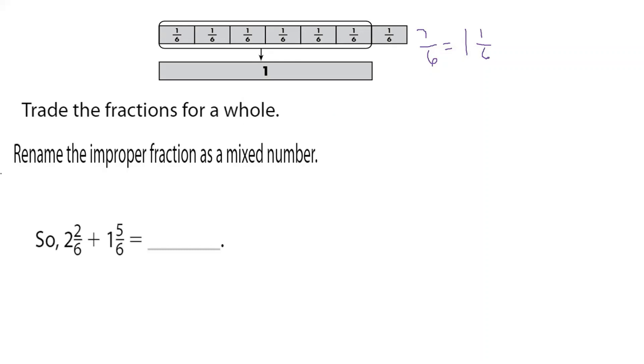So my original question, if you've forgotten, was 2 and 2/6 plus 1 and 5/6. When we added it together, we came up with 3 and 7/6. I just traded in that 7/6 for this improper fraction of 1 and 1/6. What do I do now? Am I done? No, because this is not my answer.